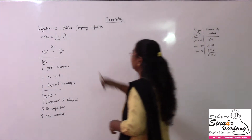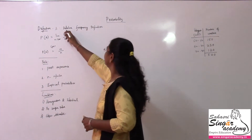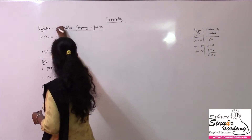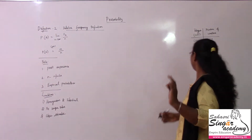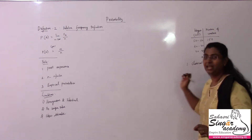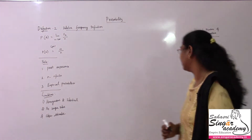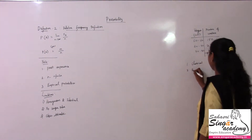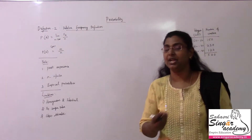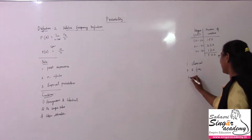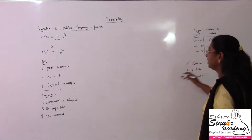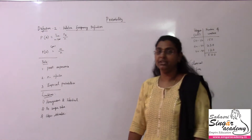Here is one discussion with definition 3, the relative frequency definition of probability. This is definition 2; definition 3 is the axiomatic definition. We were in discussion with two definitions: the first one is the classical definition, where all probability is used. The second definition is relative frequency distribution, and the third one is the axiomatic definition. So we were discussing the classical definition first, and now I am here to discuss the second definition — the relative frequency definition.